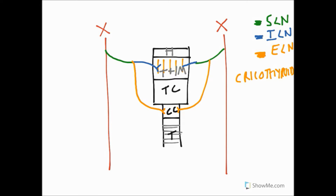So the superior laryngeal nerve branches into the internal laryngeal nerve, which is sensory above the vocal cords, and the external laryngeal nerve, which innervates one muscle and one muscle only — the cricothyroid muscle.